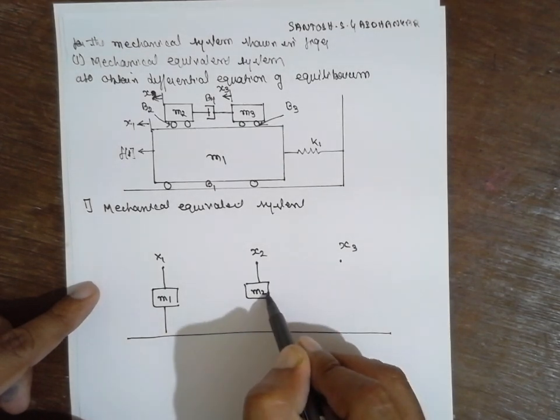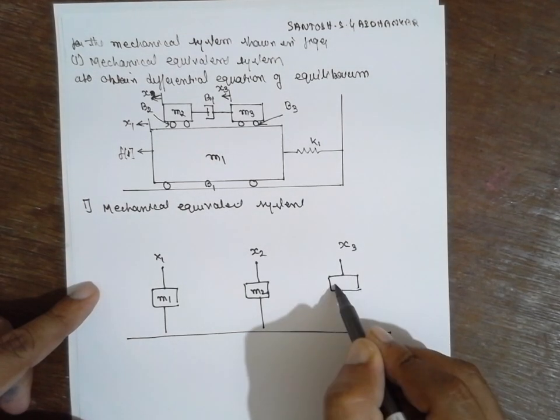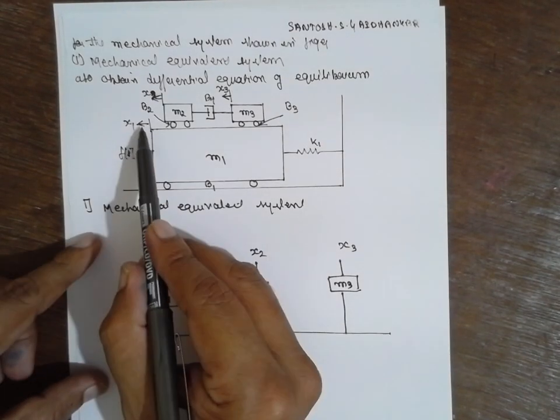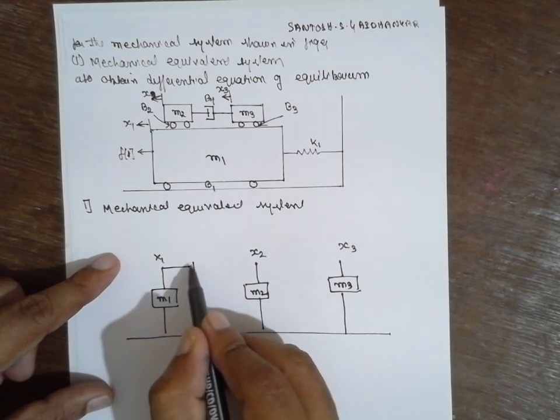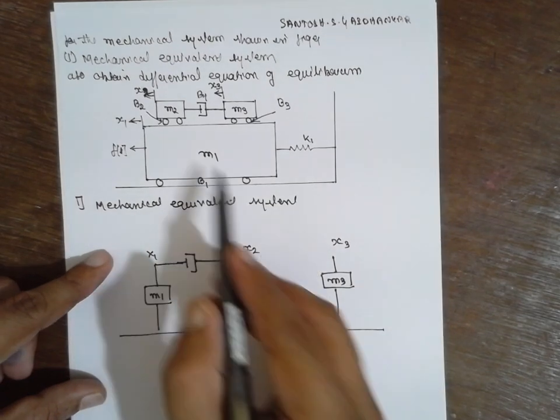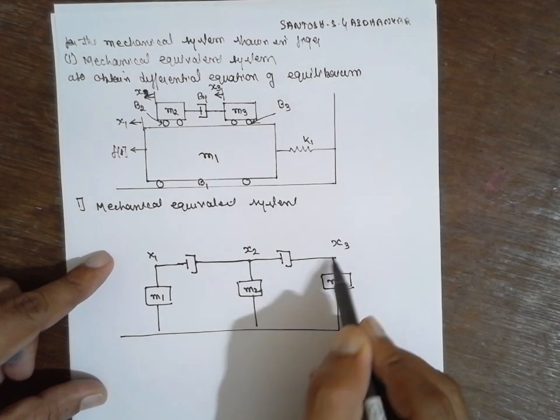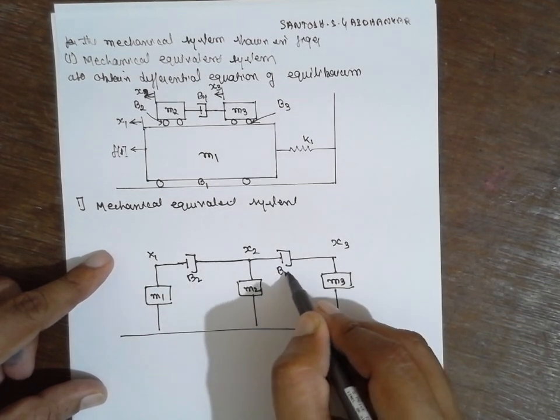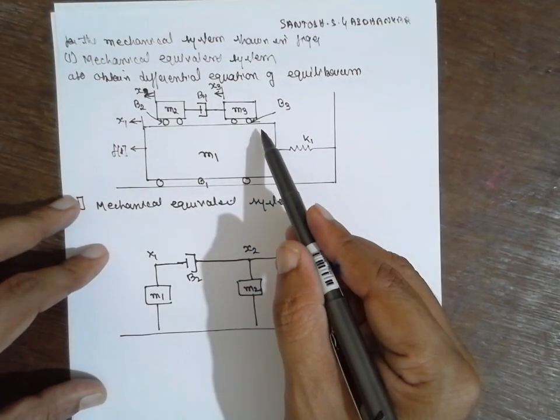Now between X1 and X2, a damper is present. Between X2 and X3, a damper is present. This is B2, B4.